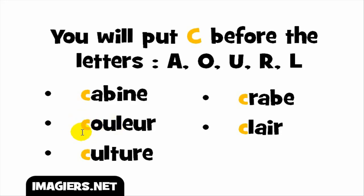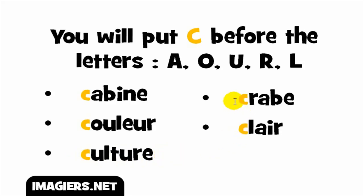The C with OU gives you the sound /k/ — 'cooler'. Third example: C plus U gives you 'culture'. And if we combine C with R, C plus R gives you the sound /k/ — 'crab'.